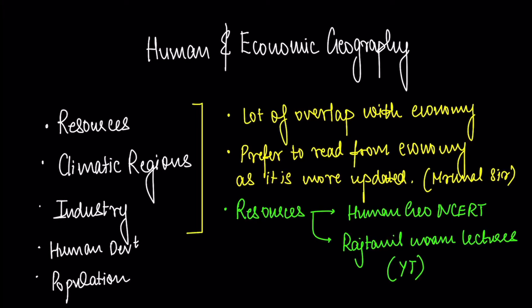Now let's talk about human and economic geography. In human and economic geography there are four main things: Resources, Climatic regions, Industry - primary, secondary, tertiary and quaternary, Human development - HDI, population etc., and of course population. There is a lot of overlap with economy. Economy also has very similar things. So I preferred to study from economy because economy is more updated. NCERT is not updated that frequently. So I used to study from Mrunal sir's notes. I think pillar six has a lot of content on geography. So I used to study from there.